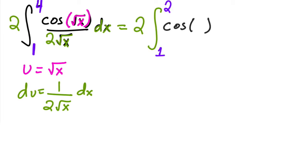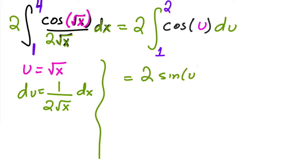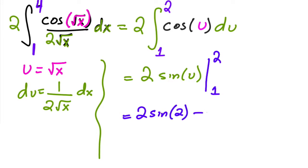So I have cosine of u, then du. The anti-derivative of cosine is sine of u. Since we already switched from x values to u values, all we have is 2·sin(2) − 2·sin(1), and this we can't calculate exactly, so we'll just leave it like that.